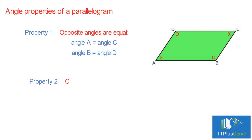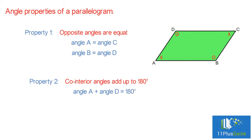Number two: co-interior angles add up to 180 degrees. In this parallelogram, angle A and angle D are co-interior angles. Therefore, angle A plus angle D equals 180 degrees. Angle B and angle C are also co-interior angles and they add up to 180 degrees: angle B plus angle C equals 180 degrees.